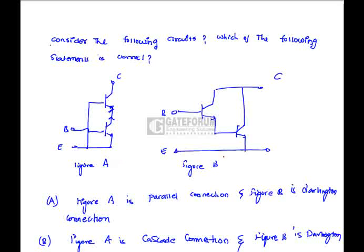It is kind of like cascade connection. That is, compared to figure B. Here, this is IB. Here, this is 1 plus HFE times IB. Here is 1 plus HFE square IB. We are getting the multiplication of the current. This is kind of Darlington connection. Figure A is a cascade connection. Figure B is a Darlington connection. Hence, option B is correct.